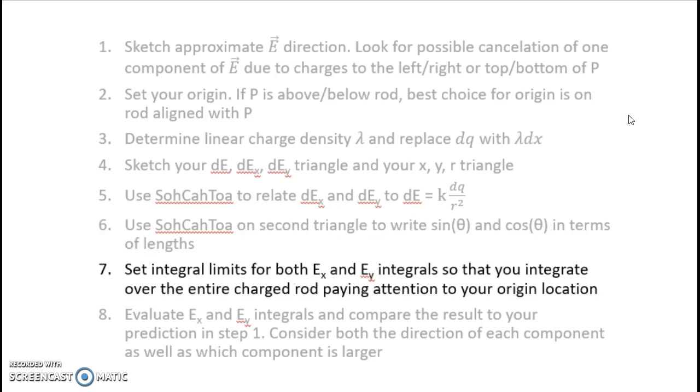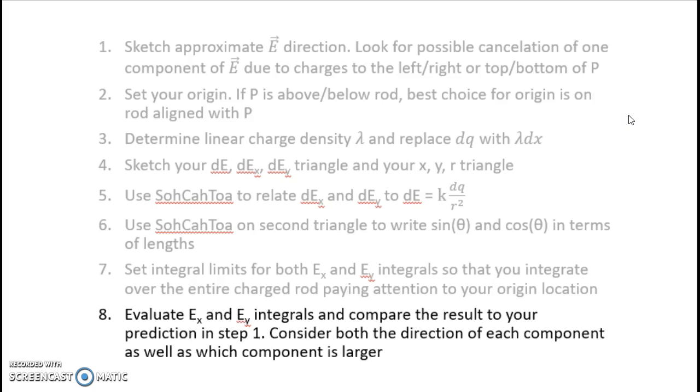We set the integral limits for both of our integrals. In both cases, we're integrating over the charged rod, so it doesn't matter which component I'm looking at, my integral limits are going to be the same. They're going to go from one end of the rod to the other. And then finally, I'm going to evaluate those integrals, either by hand or with the help of a computer program. And I'm going to compare my result back to what I was expecting in step one. So if the directions are off, I'll notice if I missed a minus sign somewhere. If I expect the y component to be bigger, and somehow my math tells me the x component is bigger, I can look and see if I missed something somewhere in my expression. Also, checking units is always something we want to do at the end of a problem. Make sure our units actually work out when we multiply all the terms together.